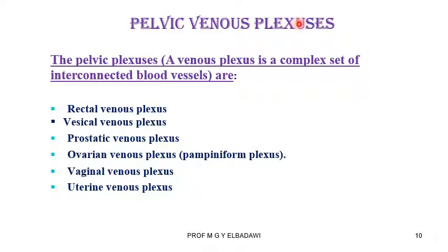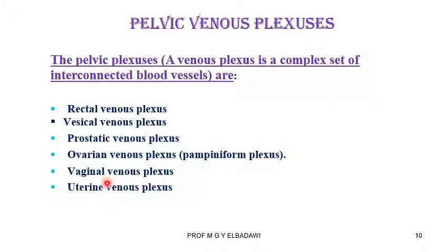The pelvic venous plexuses — a venous plexus is a complex set of interconnected blood vessels. In the pelvis, these include the rectal venous plexus, the vesical, the prostatic, the ovarian venous plexus (also called the pampiniform plexus), the vaginal, and the uterine venous plexus. These form the group of plexuses within the pelvis.